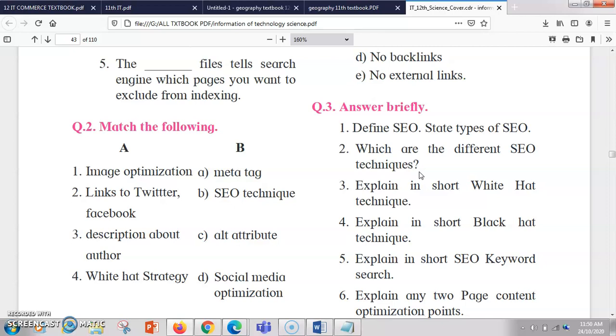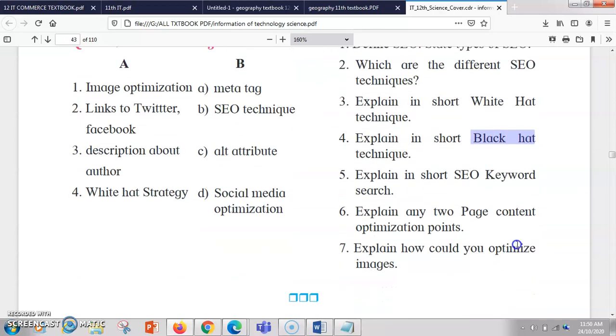Here you have to write a short note on white hat technique, and then you have to write a short note on black hat technique. Then explain in short the SEO keyword search. So what are the keywords like long tail keyword, short tail keyword, you have those keywords and how it helps. Then you can write that. Next is explain any two page content optimization points. So in this you have to write about title tag and meta tag.